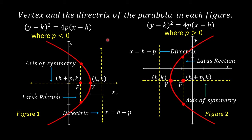Let us first look at the vertex and the directrix of the parabola in its figure. In Figure 1, the vertex is at point (h, k). The equation of the directrix is x = h minus p. If the vertex is at the left side of the directrix, the parabola opens to the left, and the equation is in the form (y - k)² = 4p(x - h), where p is less than 0.